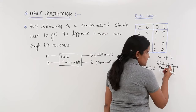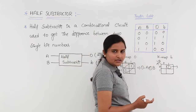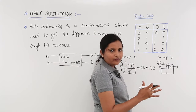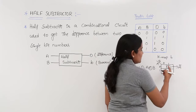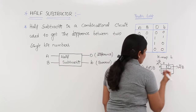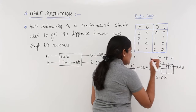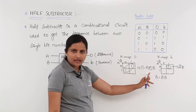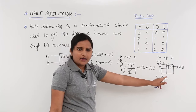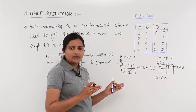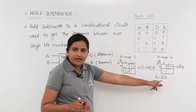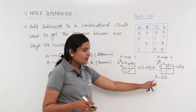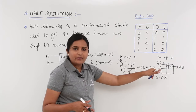The equation for this single prime implicant: column-wise it covers 0, which in sum-of-products means the complement of the variable, so that is A bar; row-wise it covers 1, which means B. Therefore borrow equals A bar times B. To summarize: difference equals A XOR B and borrow equals A bar times B. The only difference from half adder is that in half adder carry equals A times B, but in half subtractor we have complement of A, giving A bar times B.